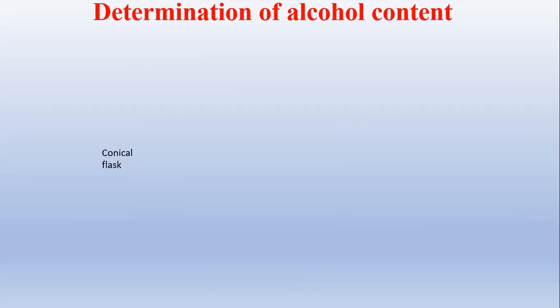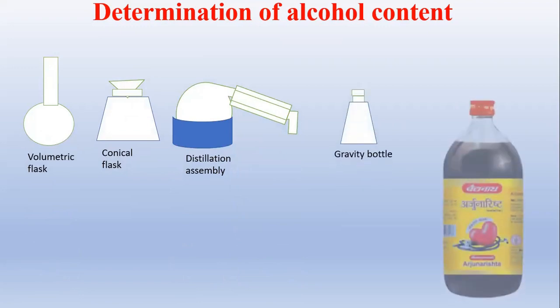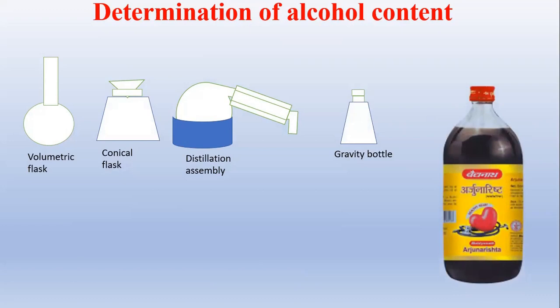There is a certain limit to the alcohol content — it is not that you should add the maximum quantity of alcohol. In this experiment we determine how much quantity of alcohol is present. Mostly Asava, Arista, and tinctures are the formulations where alcohol is present. For this determination we require a volumetric flask, a conical flask, a distillation assembly, a specific gravity bottle, and the formulation — here we have used Arjuna Arista.